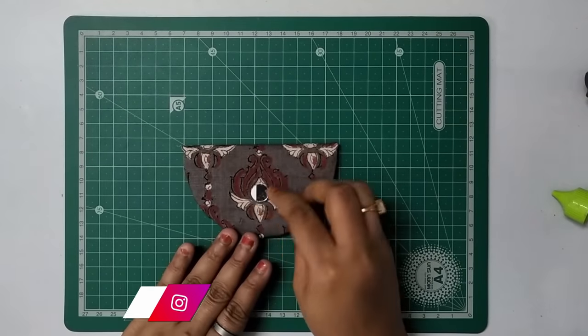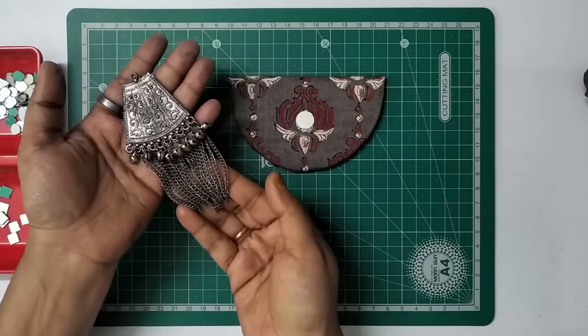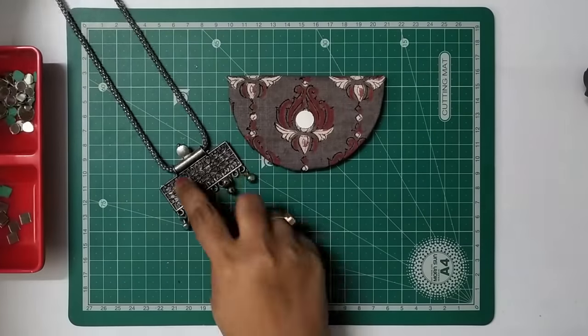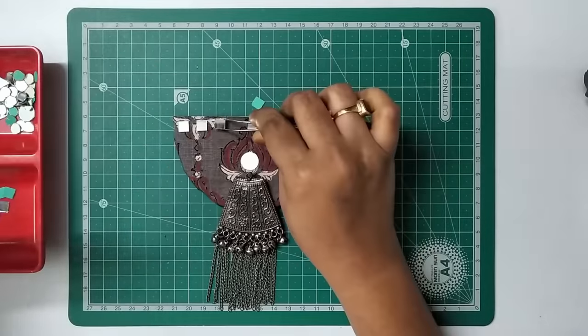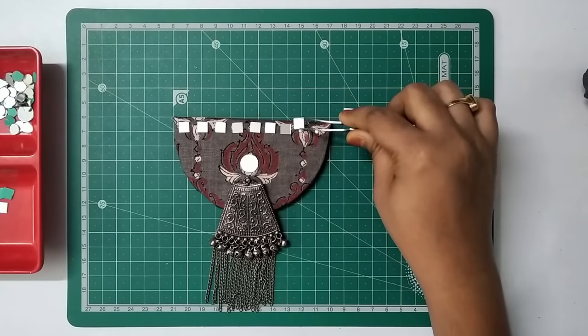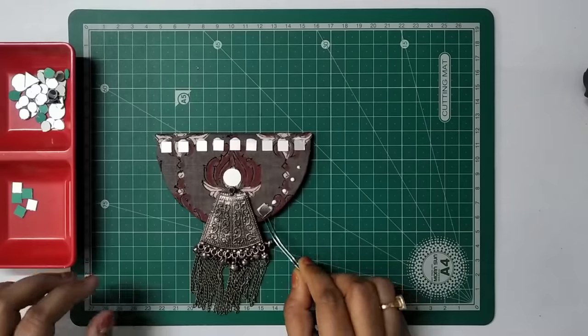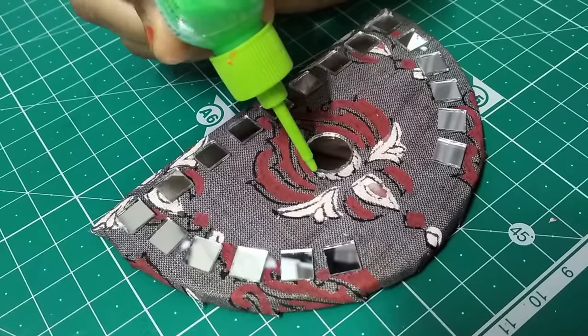Applying glue on the center of the design and placing a mirror. This piece is from an old jewelry which I don't use anymore, so I thought of using this old piece of jewelry. I can recreate something new which I can at least use. So let's see how it turns up.